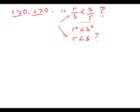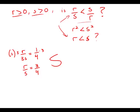Statement number one tells us that r over 3s equals 1 quarter. I'm going to multiply both sides of this equation by 3, so I get that r over s equals 3 over 4. They're in a ratio of 3 to 4. This means, of course, that s is bigger. If s is bigger, the statement is true. So statement one by itself is sufficient.